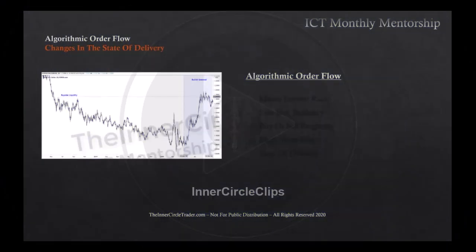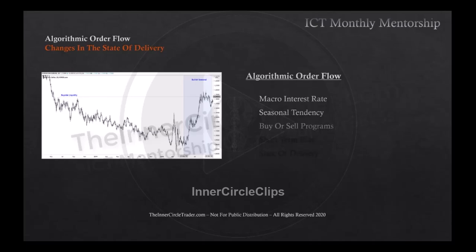I'm going to introduce the hierarchy to algorithmic order flow. It will start with macro interest rate — looking at global interest rates, strongest against the weakest. The second is seasonal tendency, third is buy or sell programs, fourth is short-term bias, and finally the state of delivery.